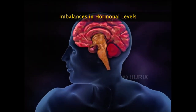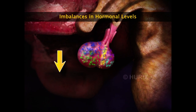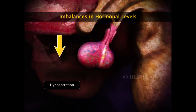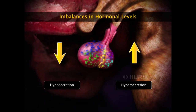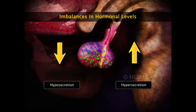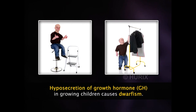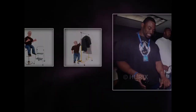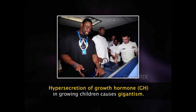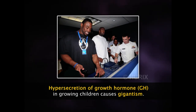Any damage to the pituitary gland causes two types of imbalances in hormone levels: hyposecretion, where hormonal levels decrease, or hypersecretion, where they tend to increase. Reduced secretion of growth hormone in a growing child causes dwarfism, and the person exhibits stunted growth. Increased secretion of growth hormone in a growing child causes gigantism, characterized by excessive height and growth.